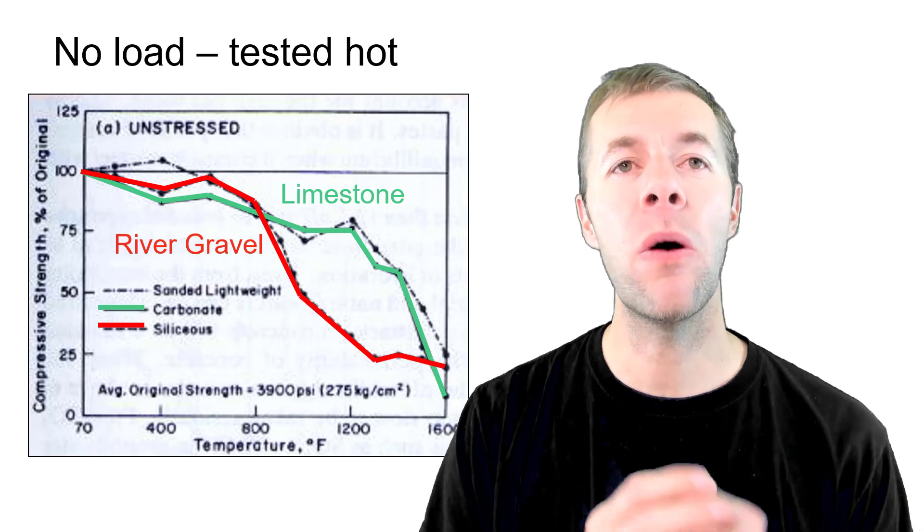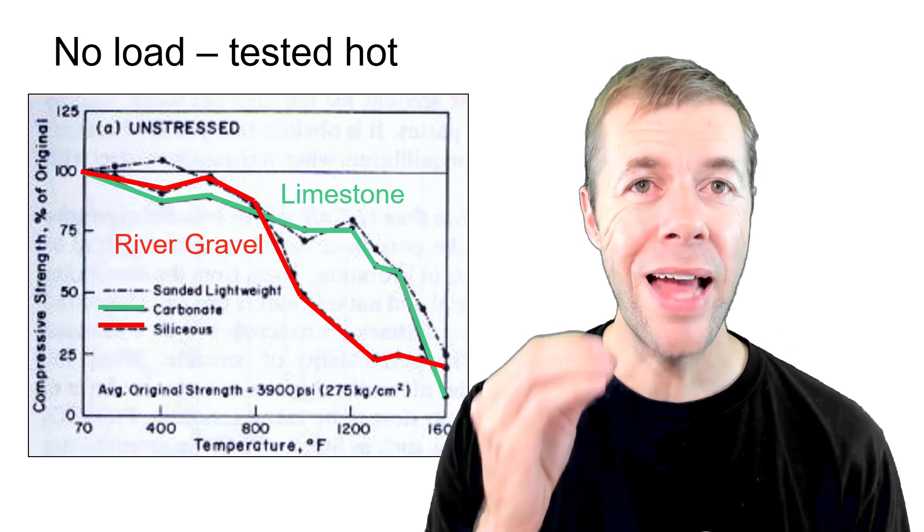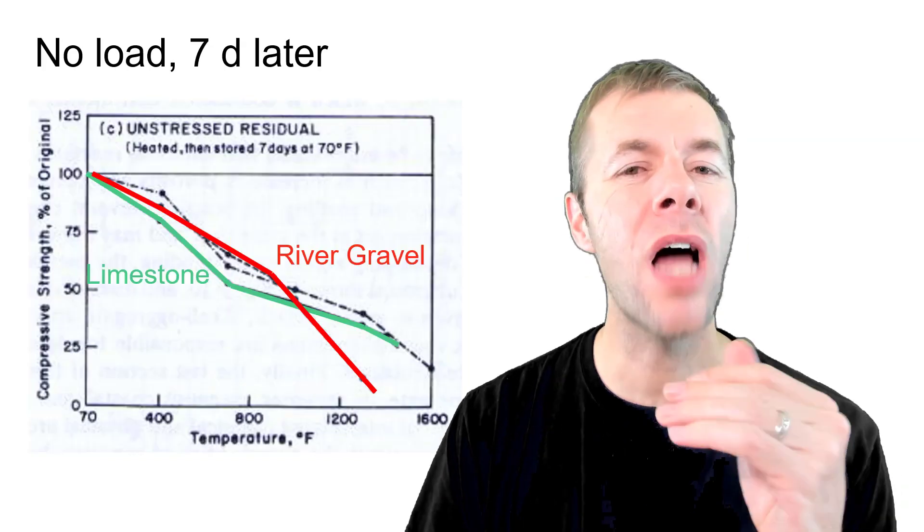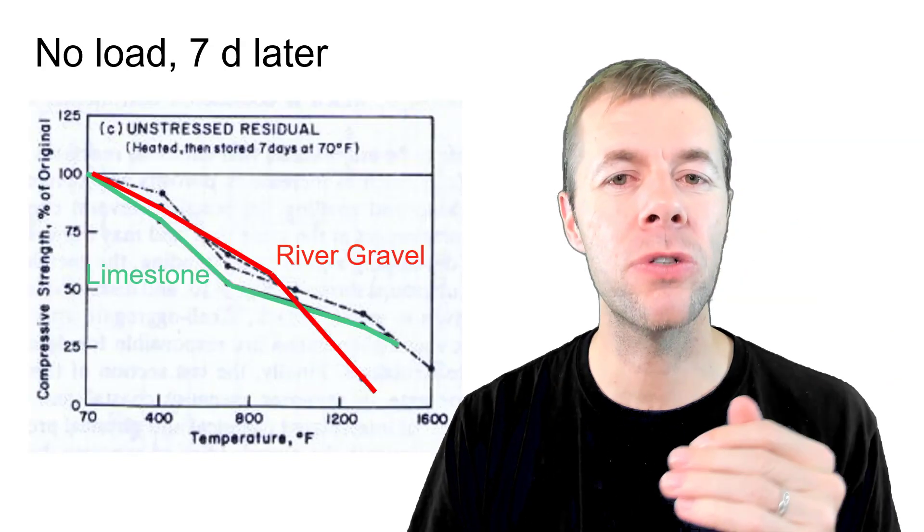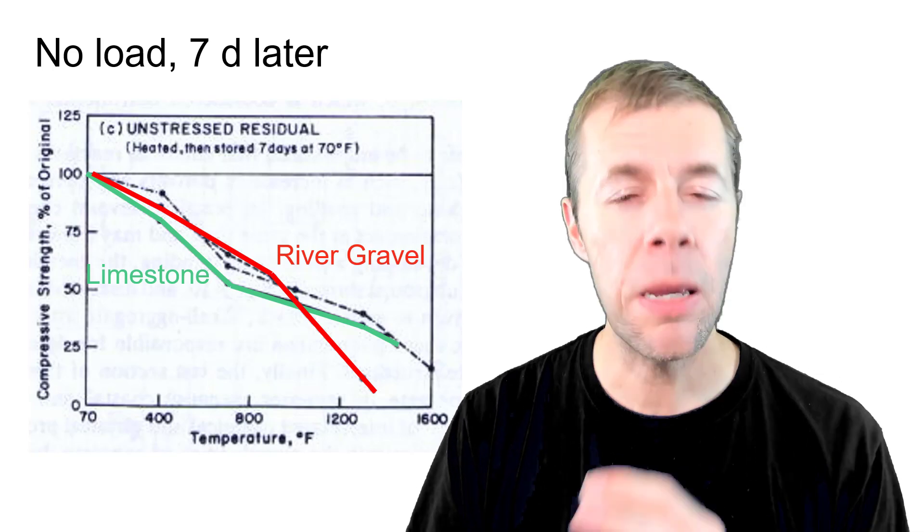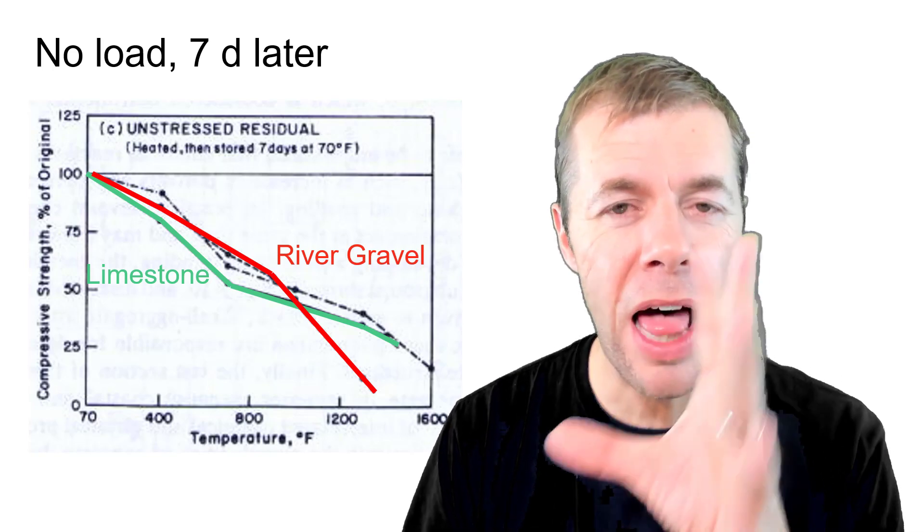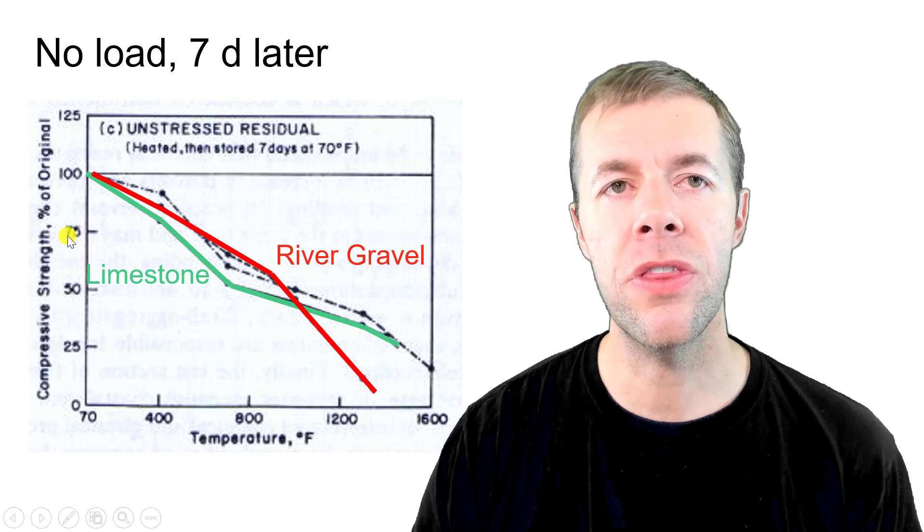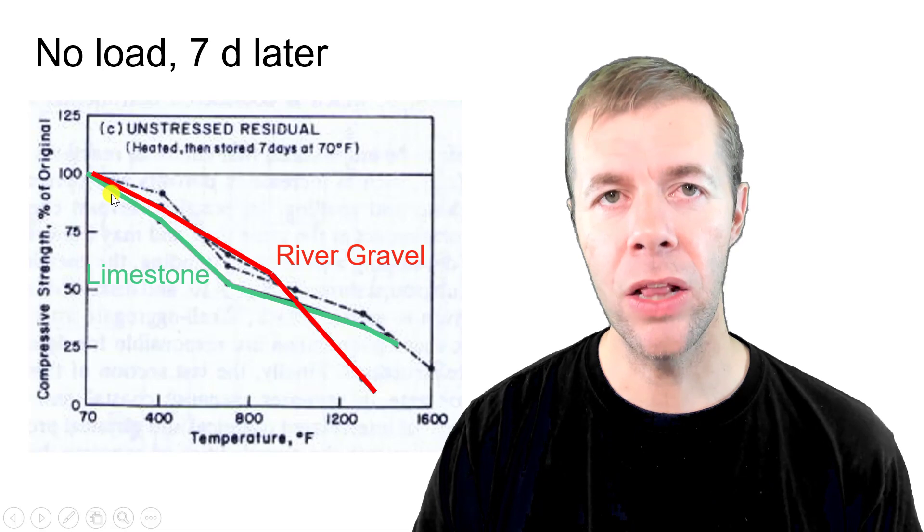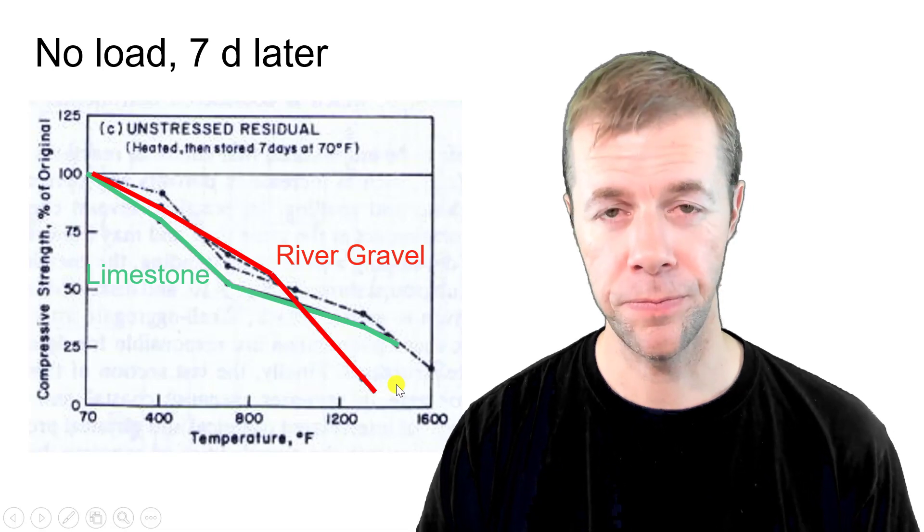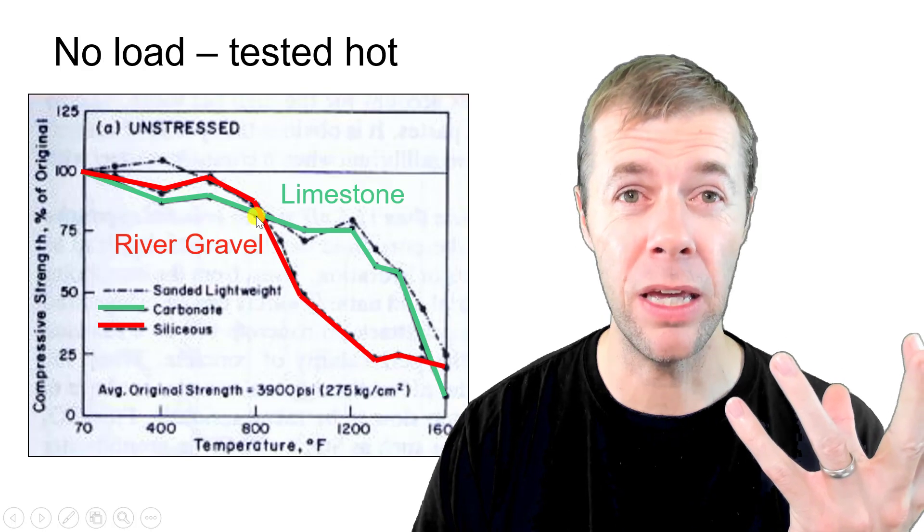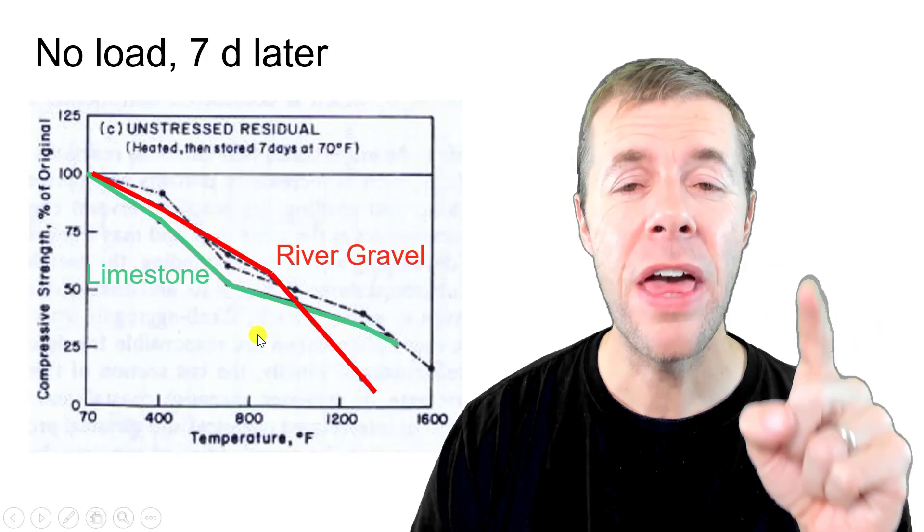But let's go back to that system that was no load and tested while it's hot. I'm going to compare it to another system. This system was not loaded. It was heated up to these temperatures and then they left them. Same concrete mixtures but they left them for seven days. This is the temperature that the concrete saw. This is the loss in strength. And look at the limestone and river gravel. This is the same stuff I showed you before. Look how high they used to be. But after sitting there for seven days they lost significant strength.